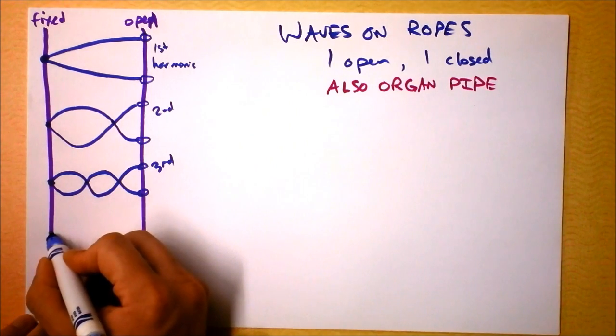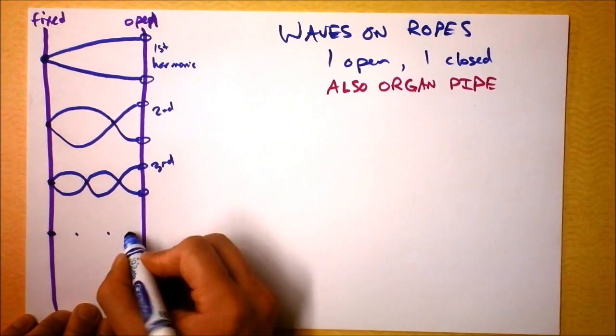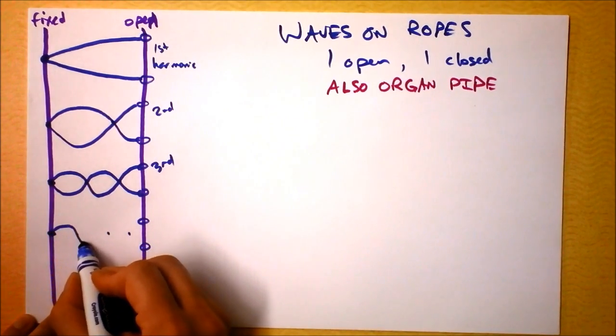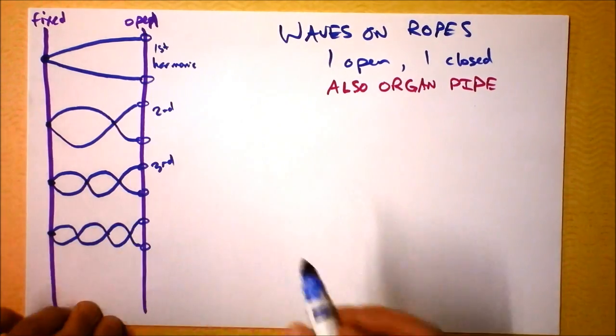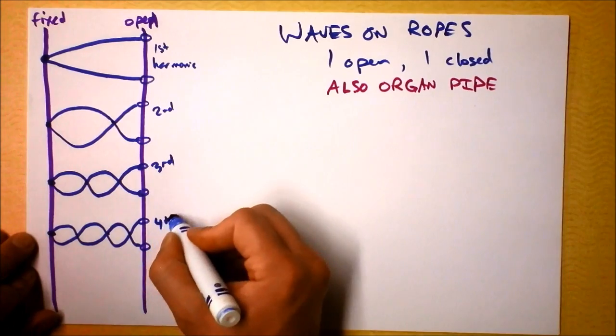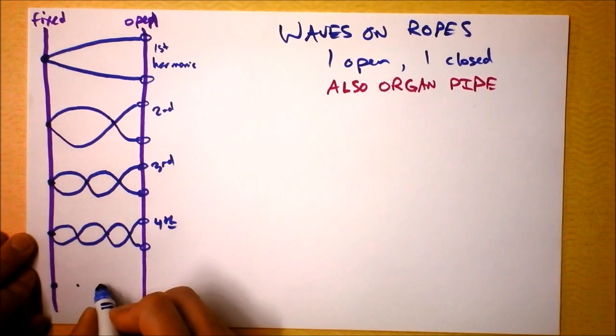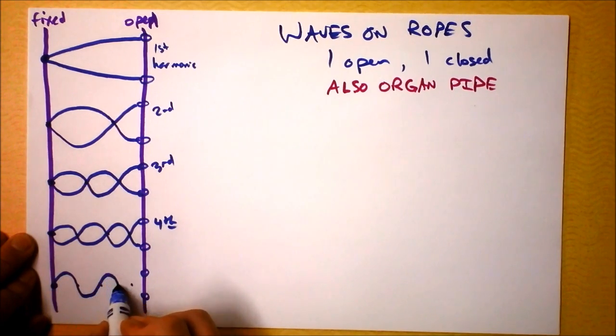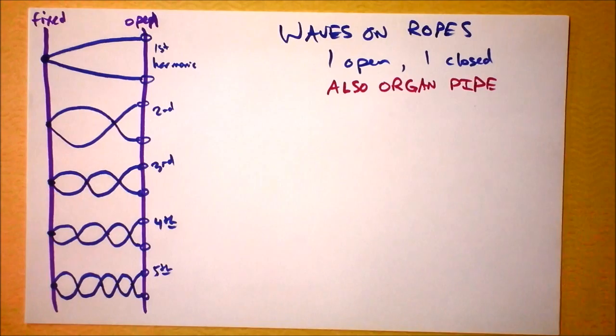And my fourth harmonic, we're going to add one additional node in the middle. I've got to have a node here and a node here and a node here, then I'm going to have an open boundary on that side. And I'll do one more, the fifth harmonic. I'm going to start here and put four nodes in the middle, and then open boundary condition here. This is the fifth harmonic of this system.